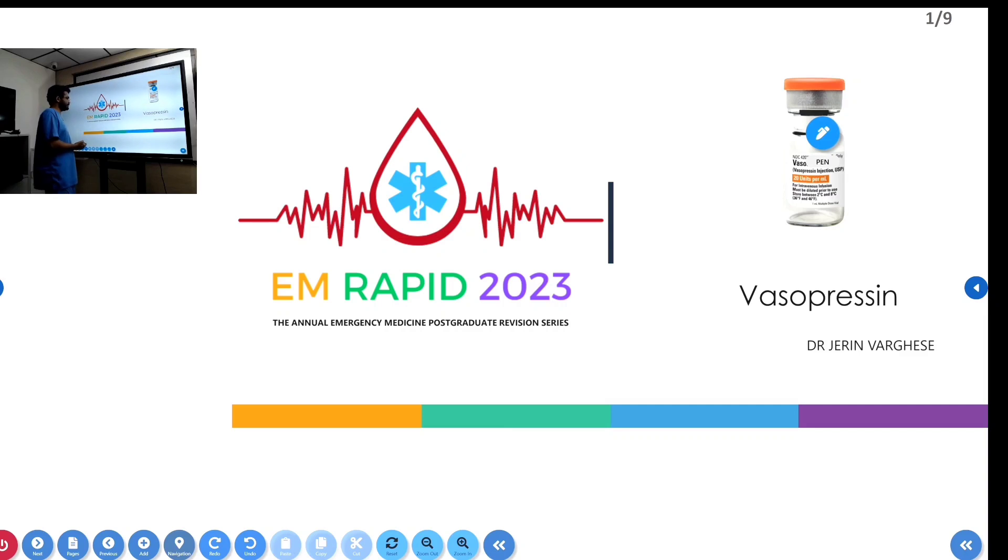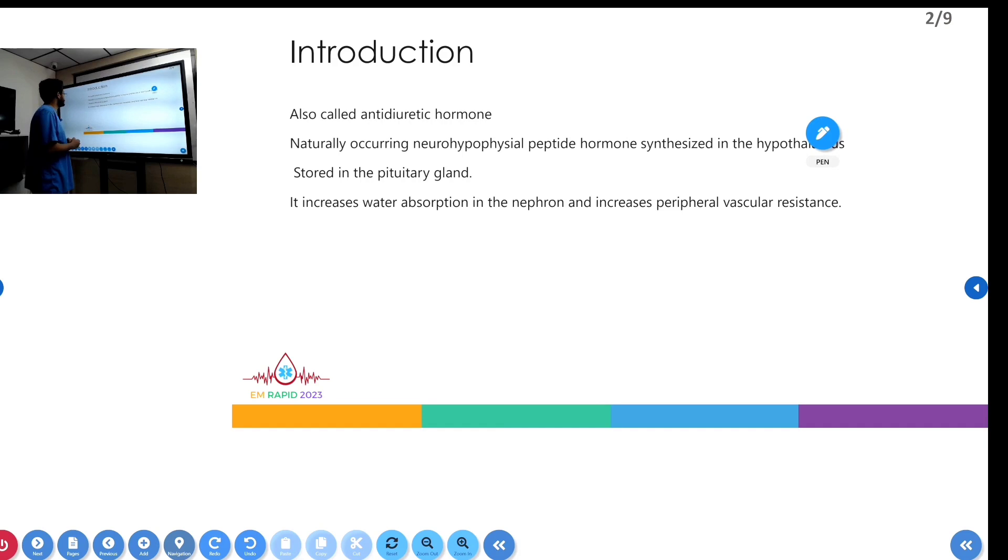Vasopressin is also called ADH, anti-diuretic hormone. It is produced in the hypothalamus as a neuro-hypophysial peptide hormone and is stored in the pituitary gland.